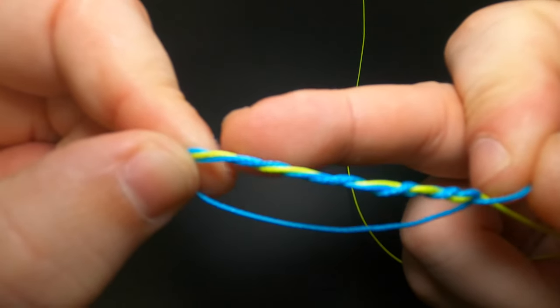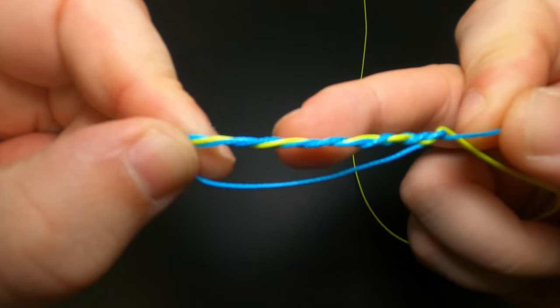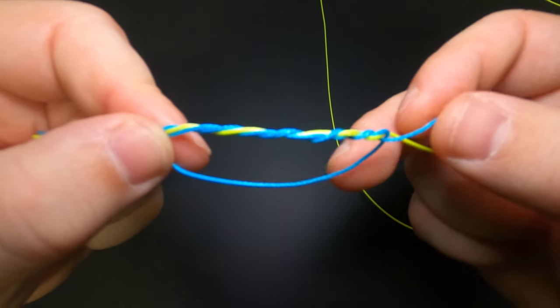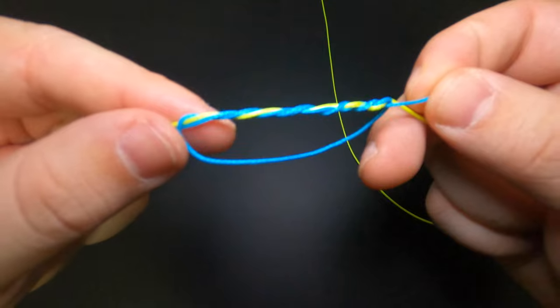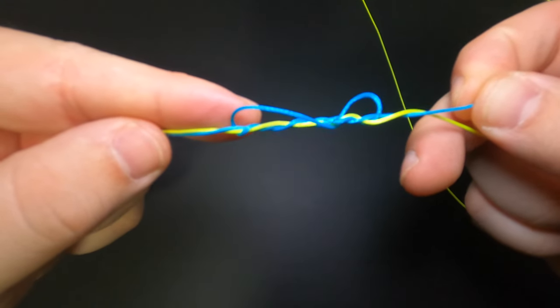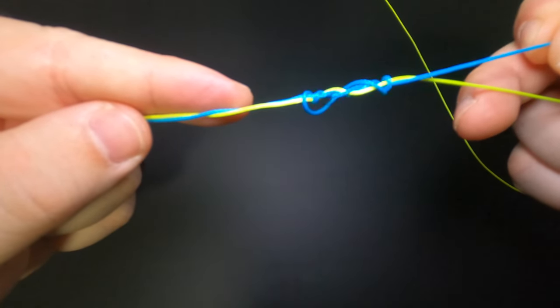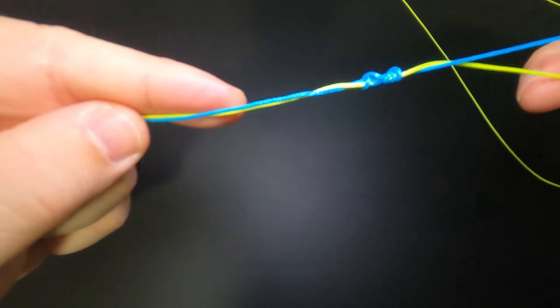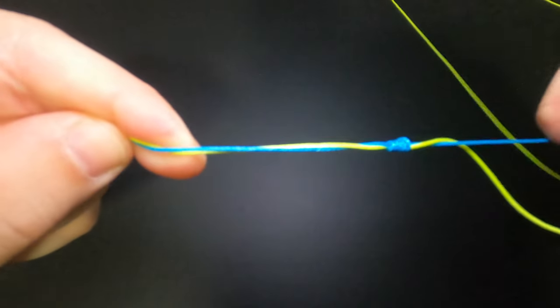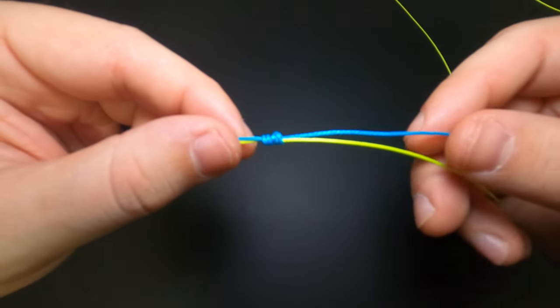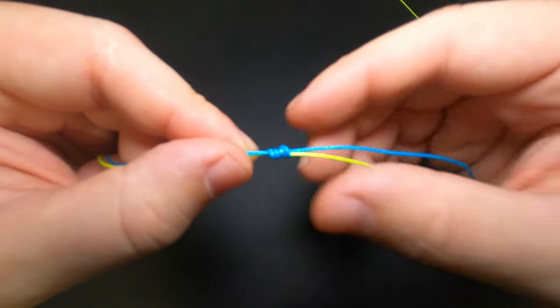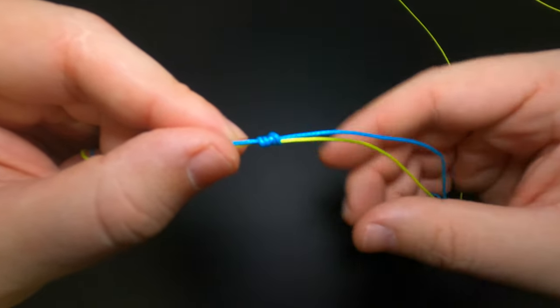Next we're just going to lubricate all of this stretch here with the twisted line with a little bit of saliva. Just like that. And we'll finish the Uni knot on this side by pulling our tag end here just to cinch that loop all the way up. Now we have our blue line representing our leader material tied to our mainline with a nice classic Uni knot.